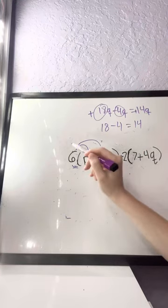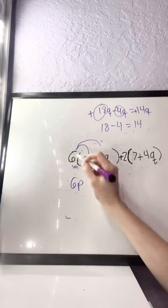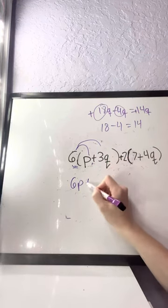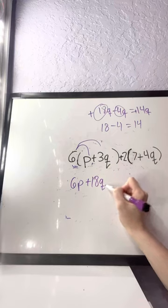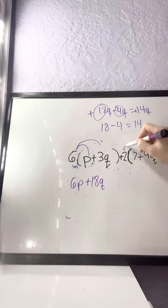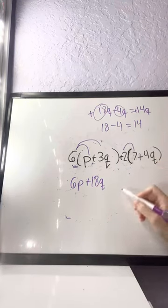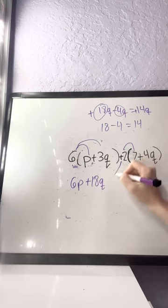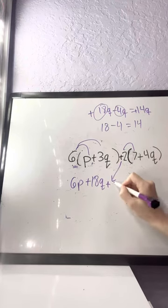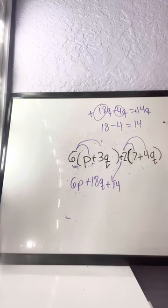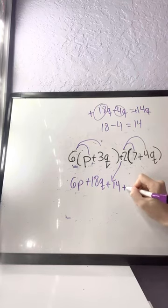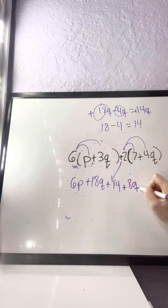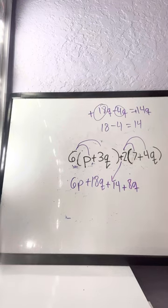So, same thing. 6, P, and then plus 18, Q. And now we do the same thing on this side. So, 2 to the 7. 2 times 7 is 14. So, we're just going to bring our plus sign down. We're going to put 14. And then 2 times 4 is 8. So, we're going to do plus 8, Q. And that same concept.